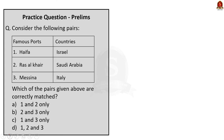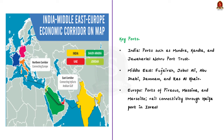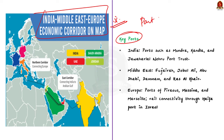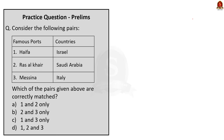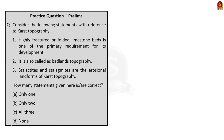This is a map-based question where famous ports are matched with their corresponding countries. Haifa Port is correctly matched with Israel; Ras al-Khair is correctly matched as a major port of Saudi Arabia; and Messina is correctly matched with Italy. These three ports are components of the recently proposed India-Middle East-European Economic Corridor (IMEC), which is why this question appeared in the exam. All three are correctly matched, so the correct option is D.